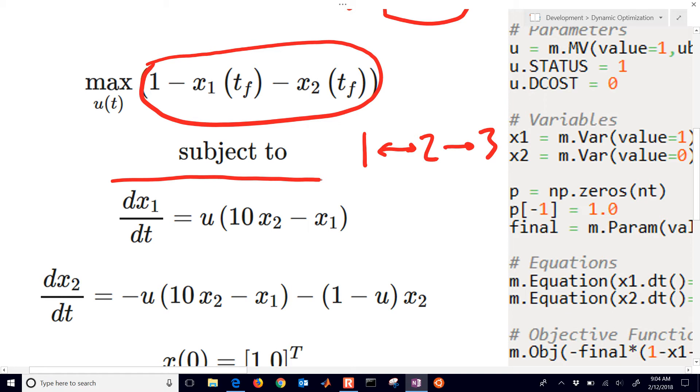So we have our disappearance of species x1. And we have our reverse reaction, which is right here. That's our reaction going backwards. And then we have our reaction going forwards, which is u times x1. Now you'll see that same term down here, but with the negative sign. Same reversible reaction. And then we have our third reaction here, which is going to x3. And that's this one right here. The disappearance of x2 as it forms x3.